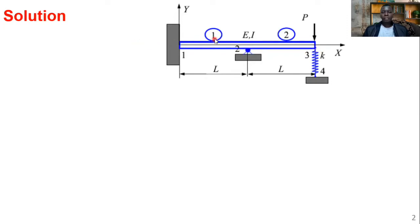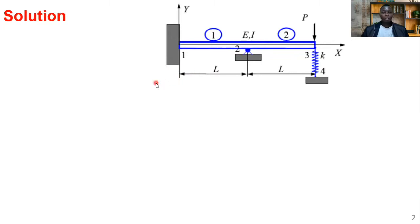Now you can see we have two beam elements and one spring element. The load applied on the spring is in the axial direction, and for the beam element the loading is transverse — both loads act in the same direction. This simplifies the assembly. Think about what would happen if the spring were not oriented in that direction as we continue.